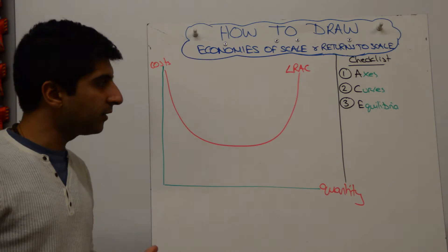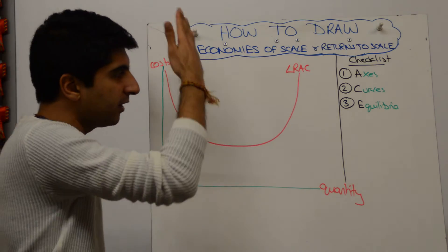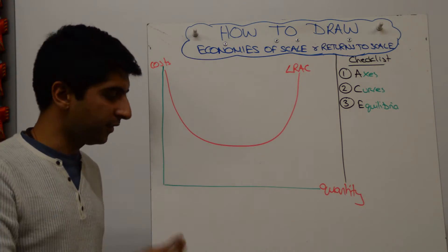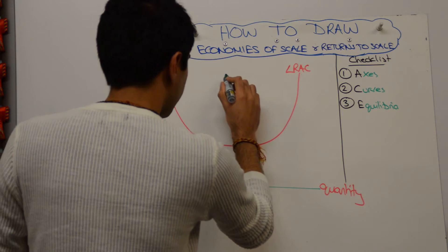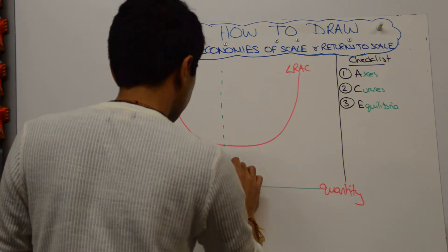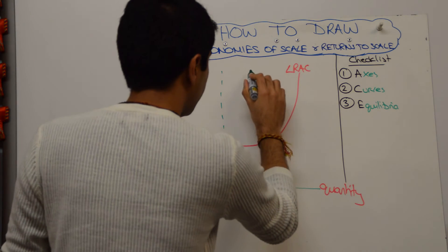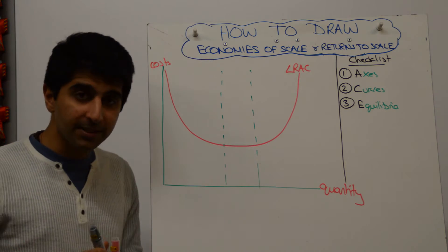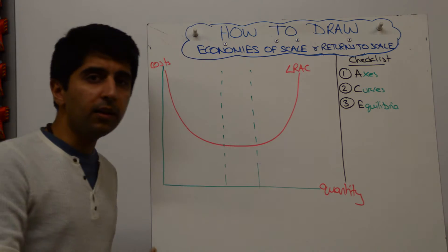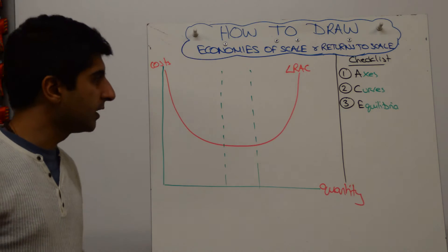The easy way of drawing this diagram is splitting the curve up into three different sections. We have the section where the curve is decreasing, the section where the curve is increasing, and the bit in between where the curve is flat. These are the sections of relevance to us.